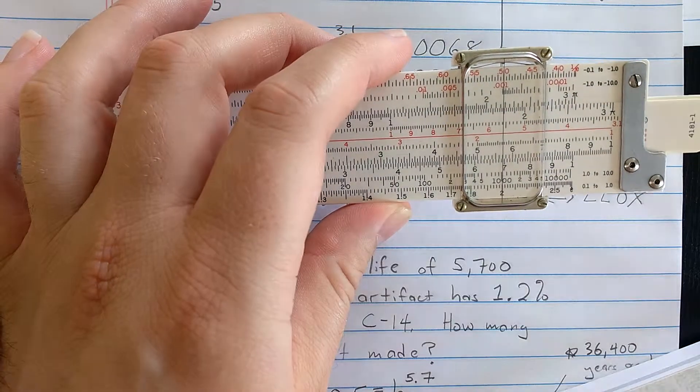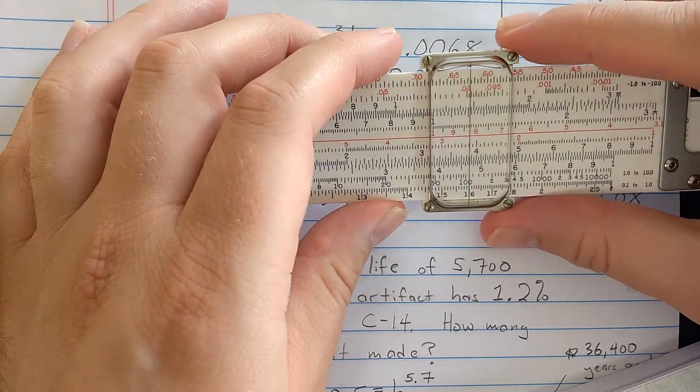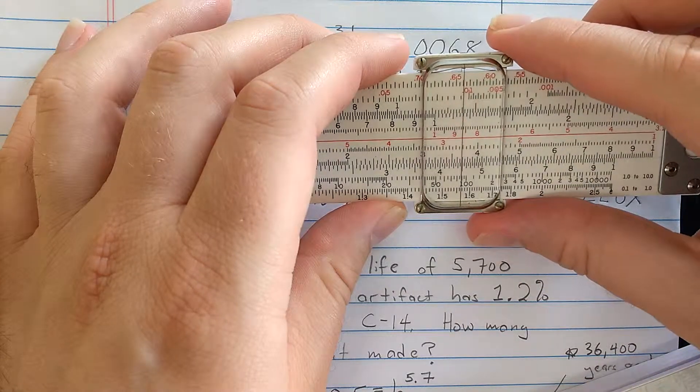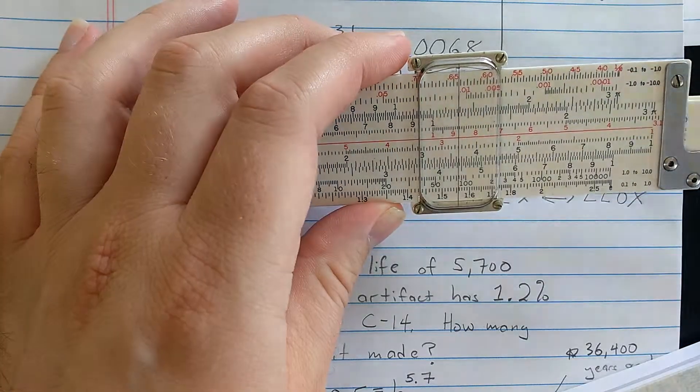Then I'm going to align that on the C scale with 5.7. So that 5.7 is for the 5,700 years, so I'm going to solve this in thousands of years.